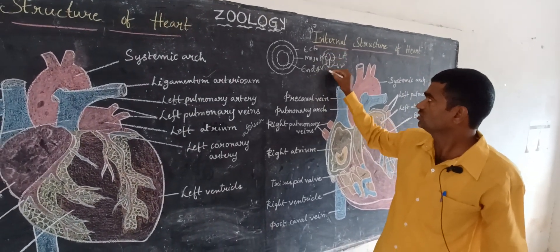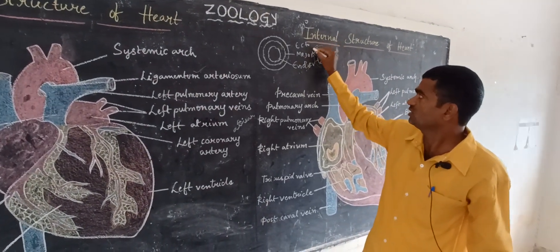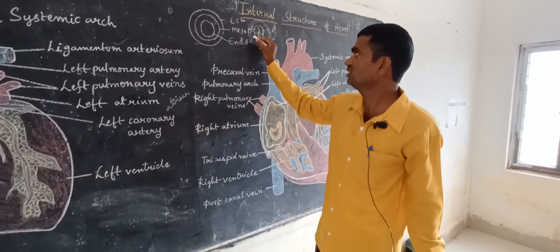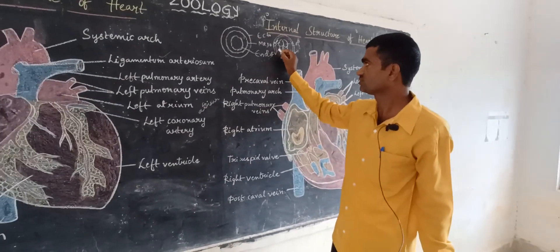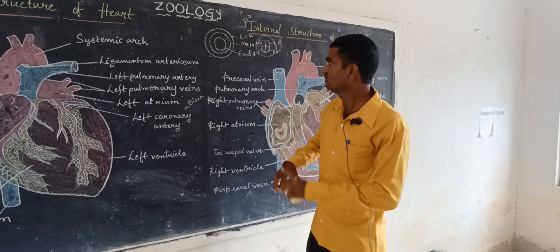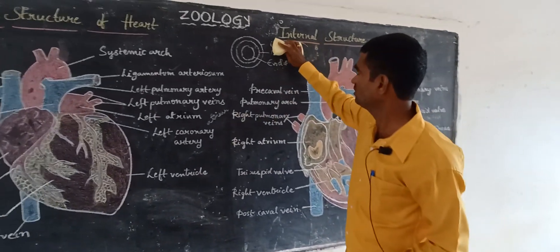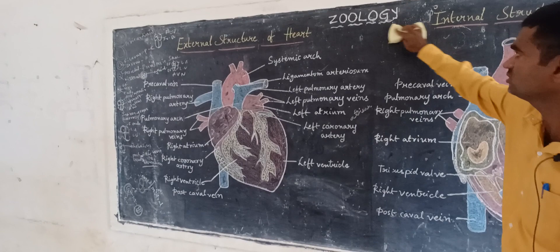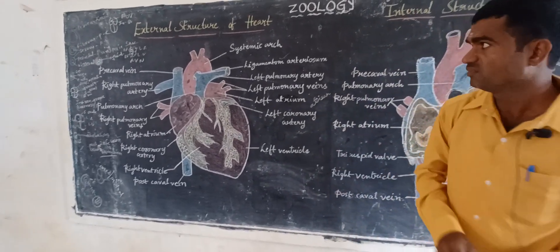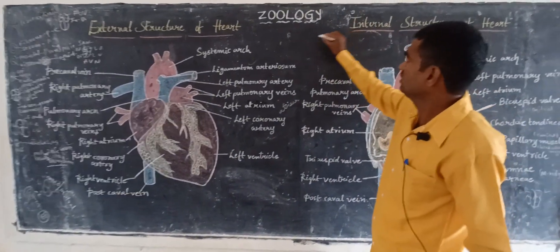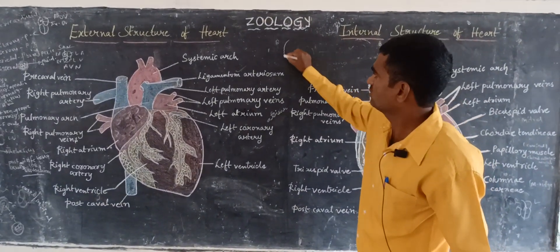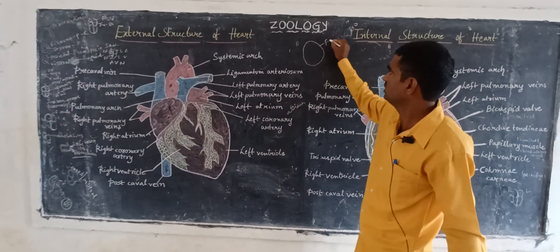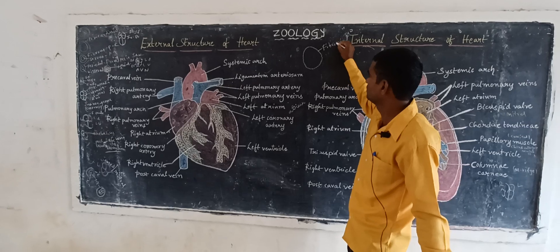The human heart is covered by different types of layers called pericardial layers. In this pericardium, it is divided into two parts. The outermost layer is called the fibrous pericardium.